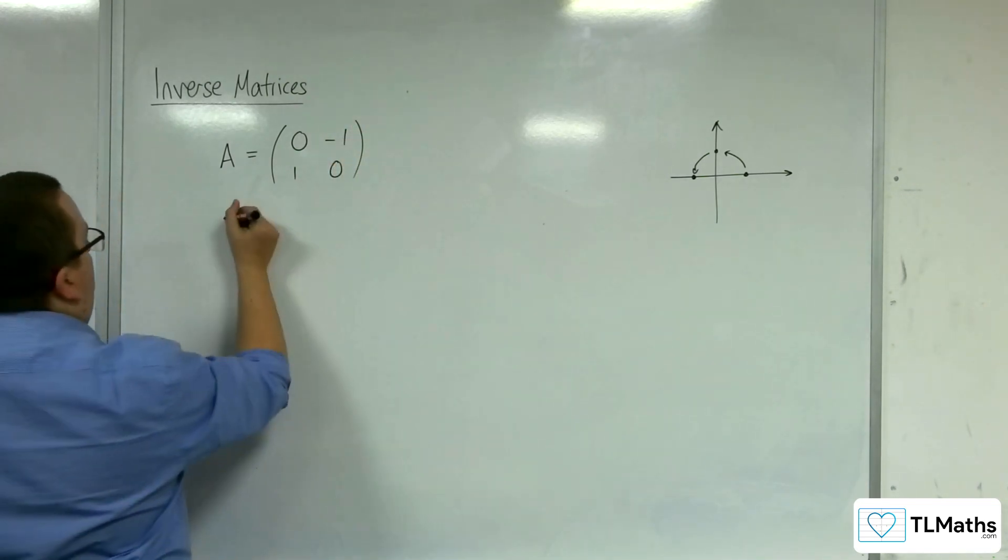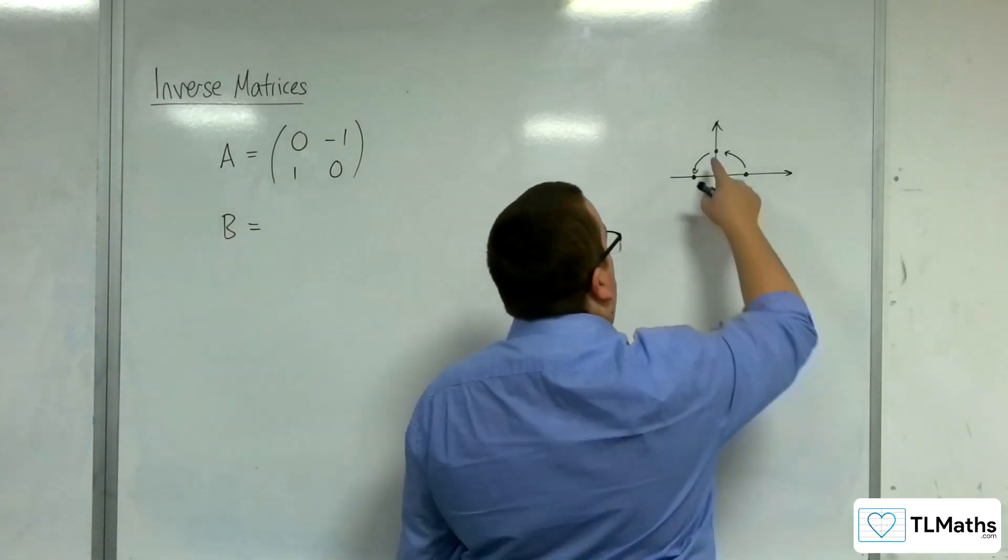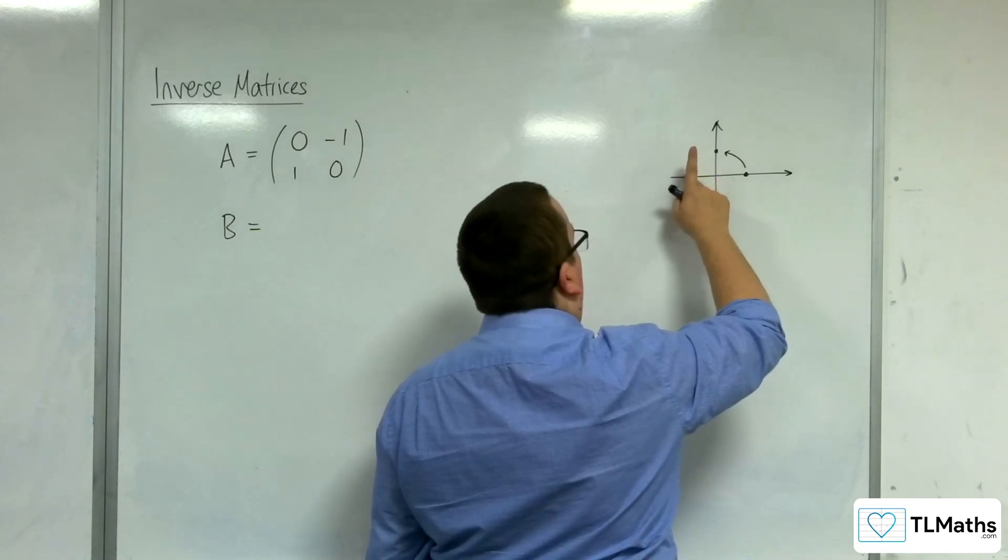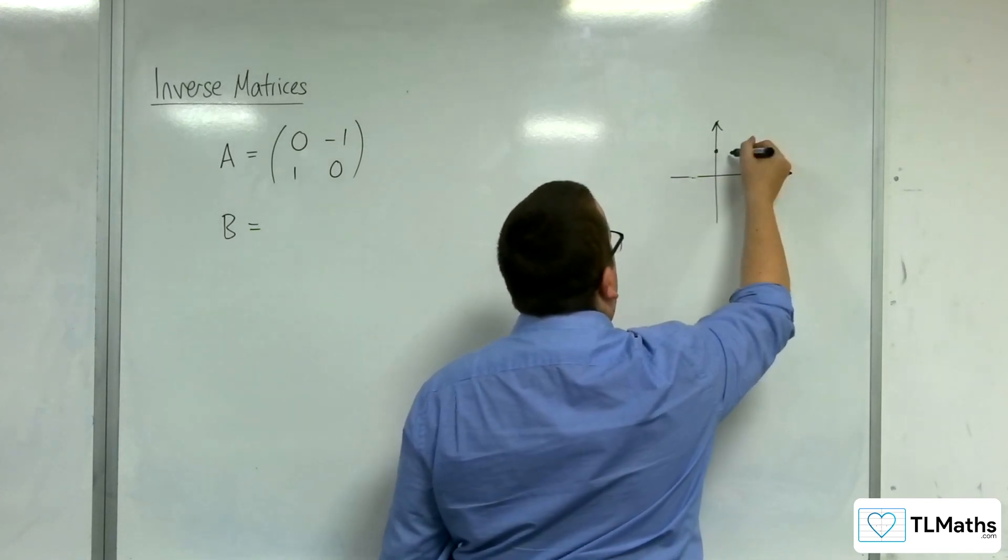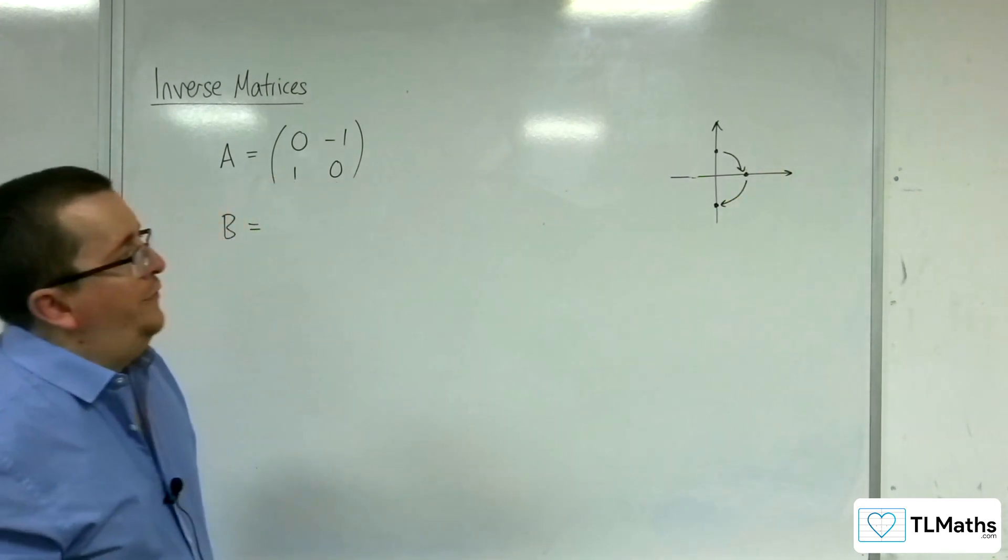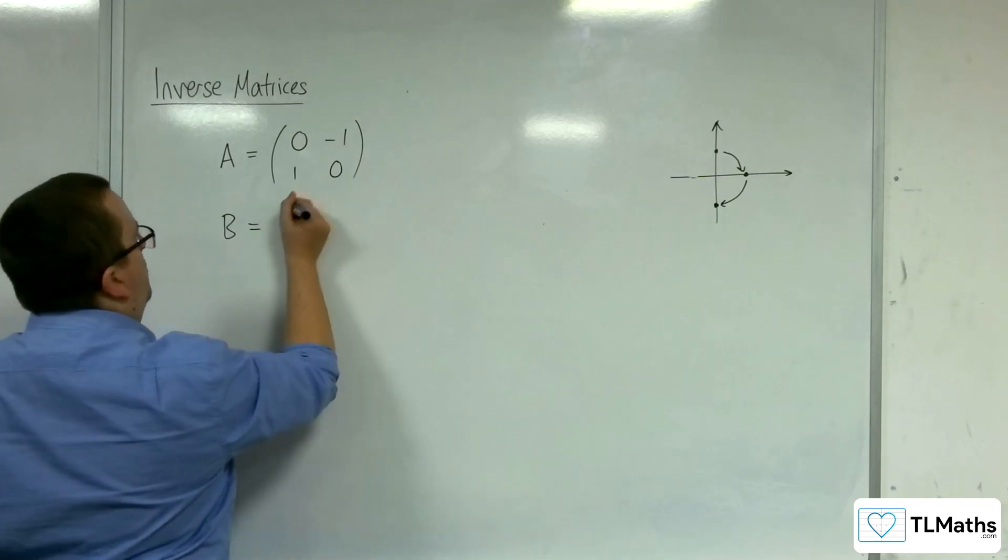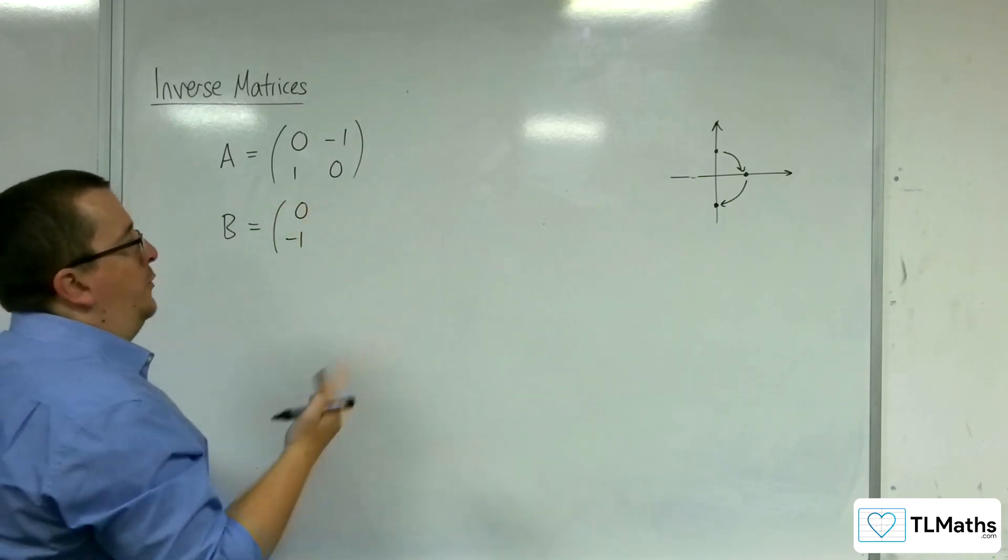Now let's say the matrix B instead rotates round clockwise by 90 degrees. So the coordinate 1, 0 has gone to 0, minus 1, and the coordinate 0, 1 has gone to 1, 0.